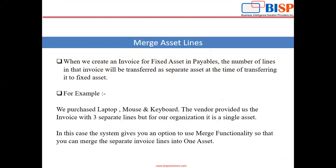When we create an invoice for a fixed asset in Payables, the number of lines in that invoice will be transferred as separate assets at the time of transferring into fixed asset. For example, we purchase a laptop, mouse, and keyboard for our organization — these three are one asset. But when the vendor provides the invoice, it has three separate lines. In this case, the system gives you an option to use merge functionality so that you can merge the separate invoice lines into one asset. This is the concept of merge asset lines.